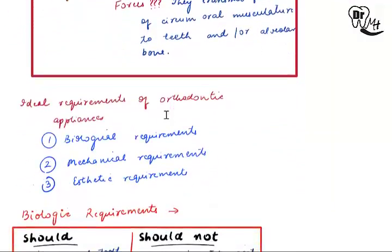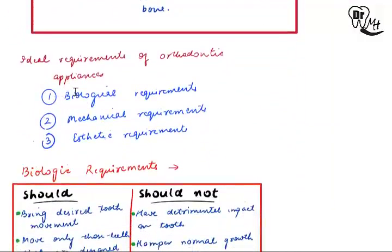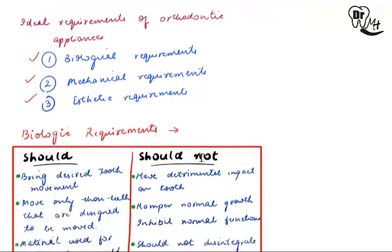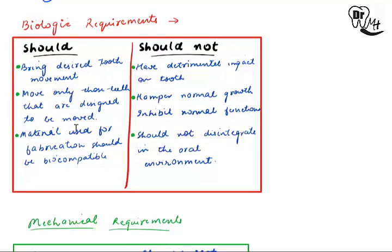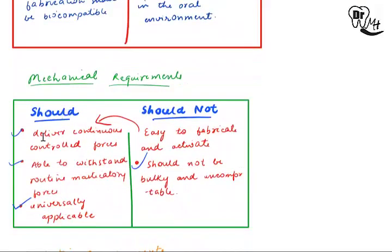There are certain ideal requirements of orthodontic appliances, characterized as biological, mechanical, and aesthetic requirements. Under biological requirements: they should bring about the desired tooth movement; they should move only those teeth that are designed to be moved; the material used for fabrication should be biocompatible and should not react with tissues or harm them; they should not have a detrimental impact on the tooth, should not hamper normal growth, should not inhibit normal functions, and should not disintegrate in the oral environment.